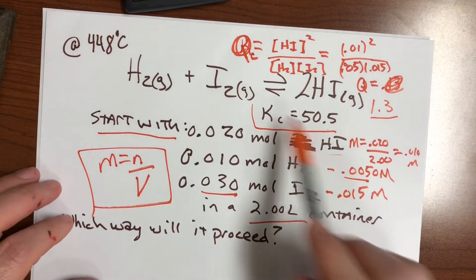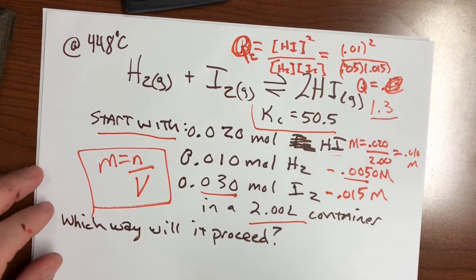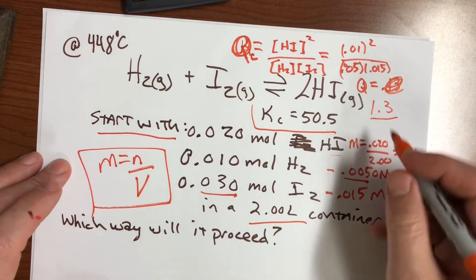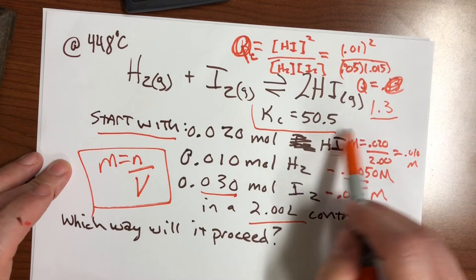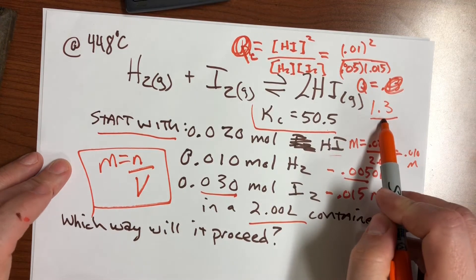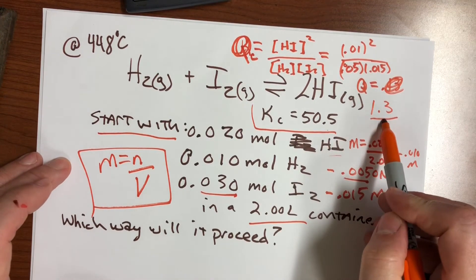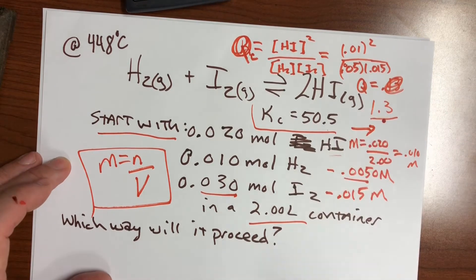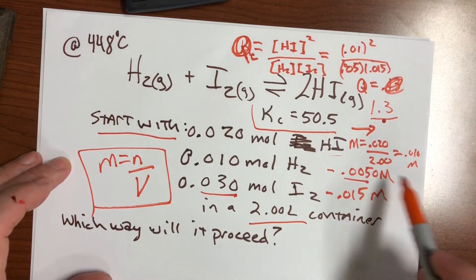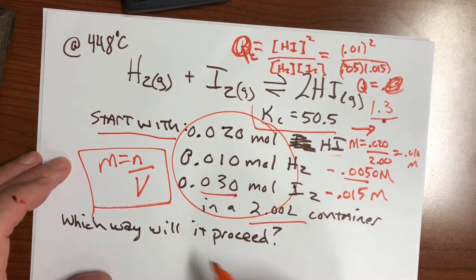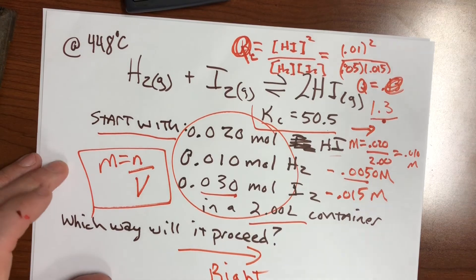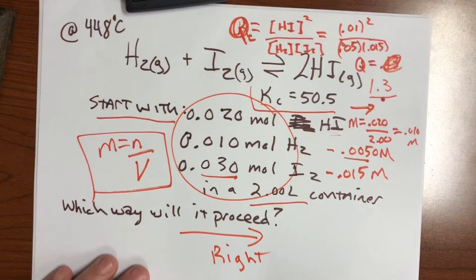So if we put these amounts of things into the pot, we will see that they are going to need to run, need to make—it's too small, so we need to make more products, more numerators to make the number bigger, so it's going to run to the right. So if we put these amounts of things in, it's going to proceed to the right. All that to get a one-word answer: to the right or to the product side.